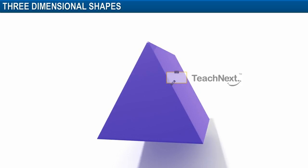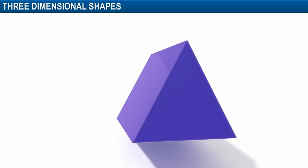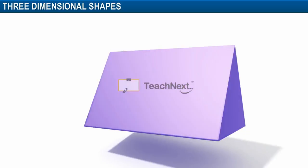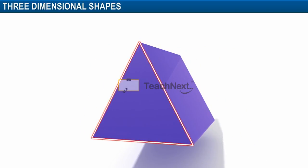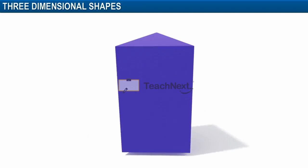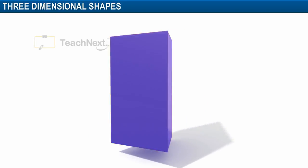In general, a prism will have two bases. Here, for this prism, the bases are triangles. The other faces are rectangular in shape.